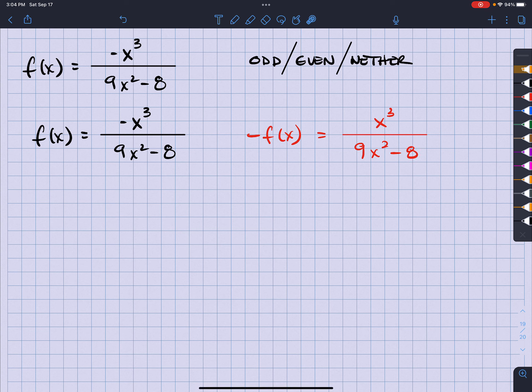So notice that I only multiply the negative 1 through the top and not the bottom. Because if I do both, then now I'm back to just multiplying by 1. Because negative divided by negative would be positive.